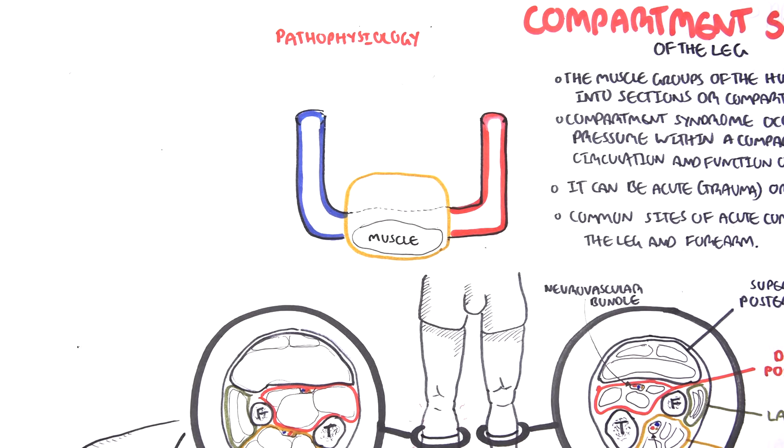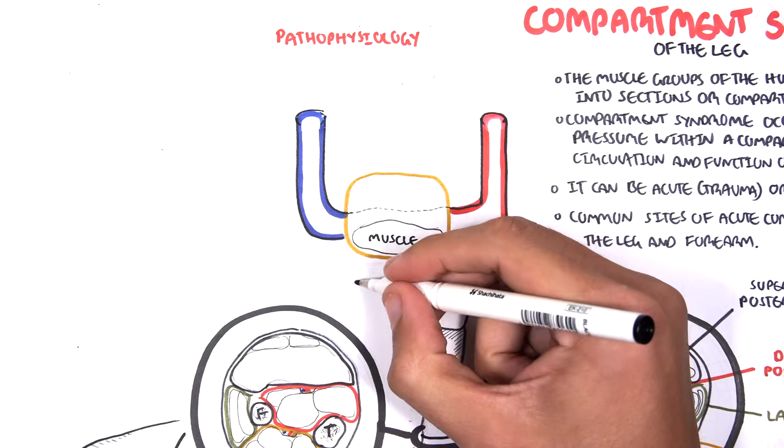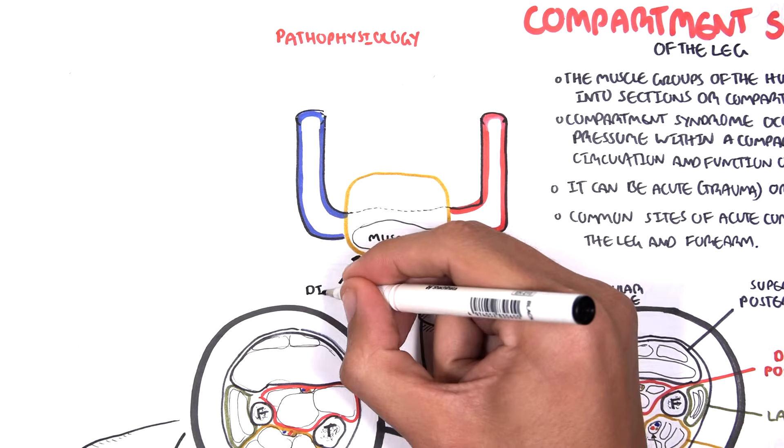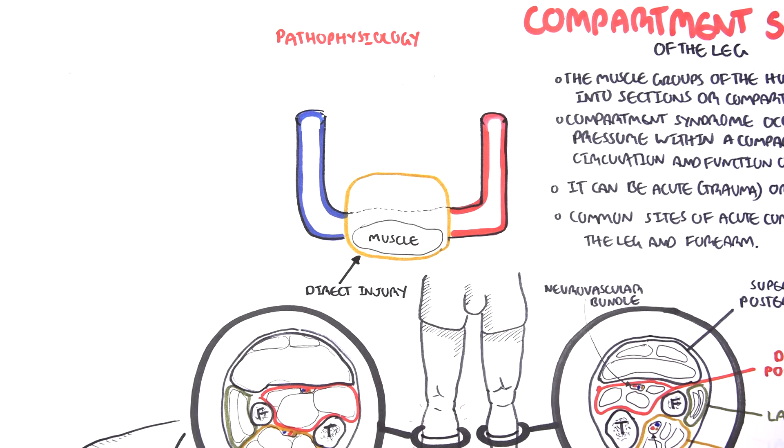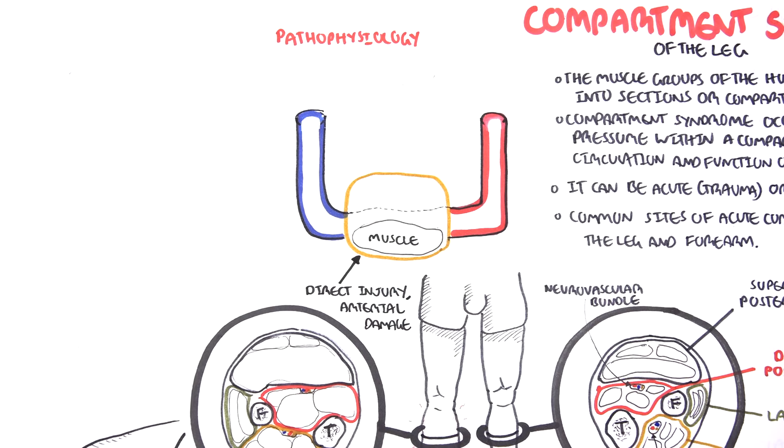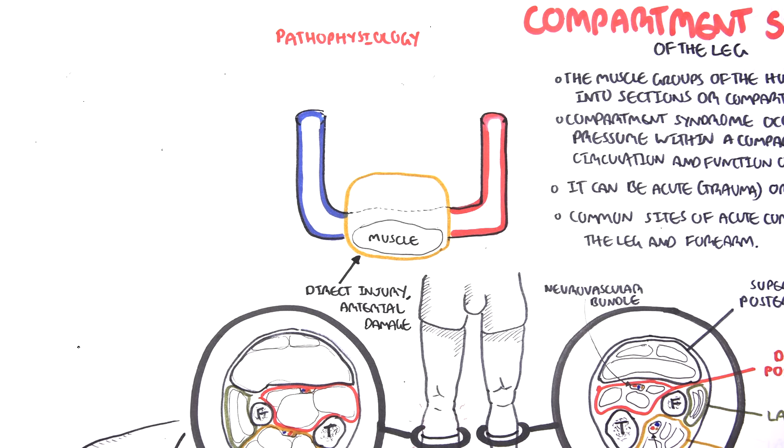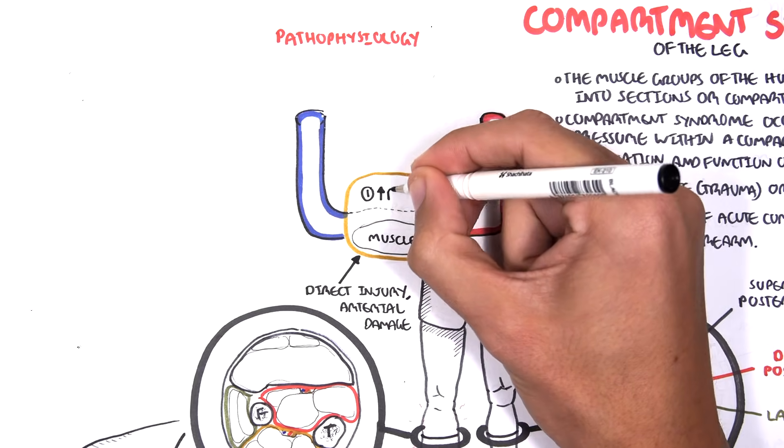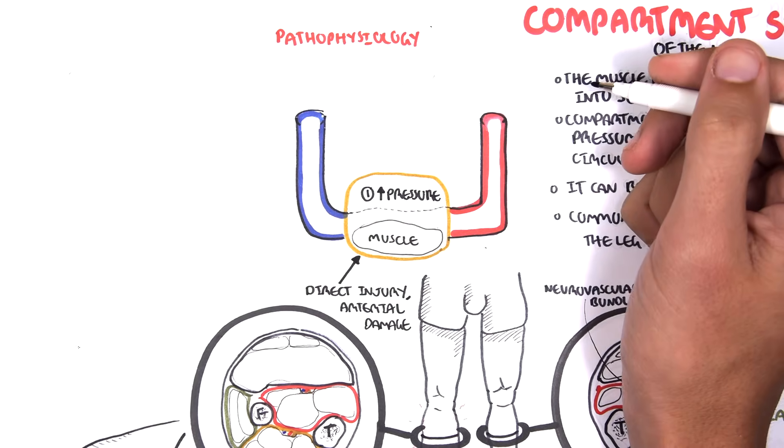Many things can trigger acute compartment syndrome, but let us say for simplicity there is direct damage to the muscle or arterial injury in the muscle. This will cause some form of inflammatory process and reaction which will eventually cause fluid to shift into the muscles causing compartment edema.